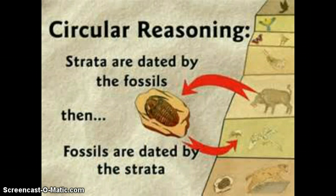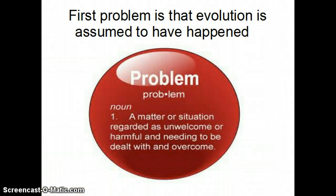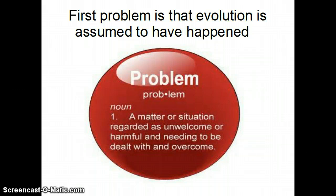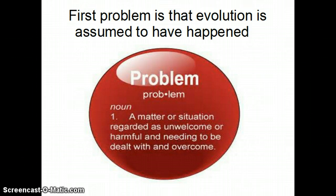Before we move on, we need to understand a major flaw in how evolution analyzes data. The first problem is that evolution is assumed to have happened. When you assume something before you come to your conclusion, it often skews your results. Your conclusions are often faulty because you went into it with a preconceived notion. So if evolution is assumed to have happened, your results are going to be a little flawed.